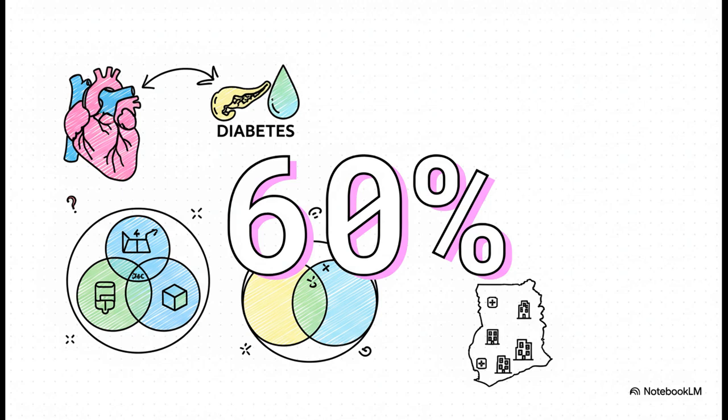Just let that sink in for a second. A random person in this group has a 40% chance of having diabetes. But if we know they have hypertension, that chance skyrockets to 60%. That is not a coincidence. That is a connection. We've proved it.